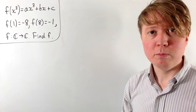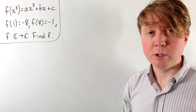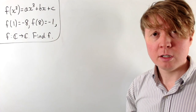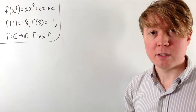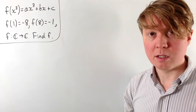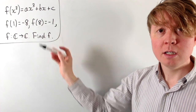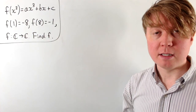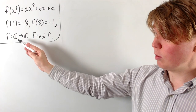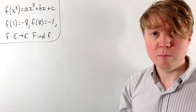We're going to solve this problem where we need to find the function f, which satisfies this equation for all values of x, where a, b, and c are some constants we'll need to find. We're also given that f(1) = -8 and f(8) = -1, where f is a function mapping from the complex numbers to the complex numbers.